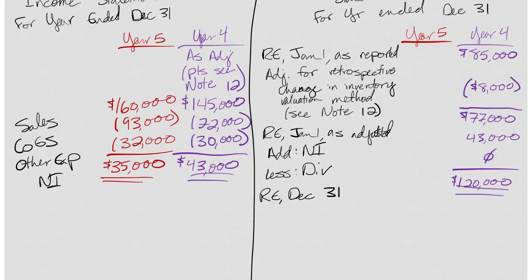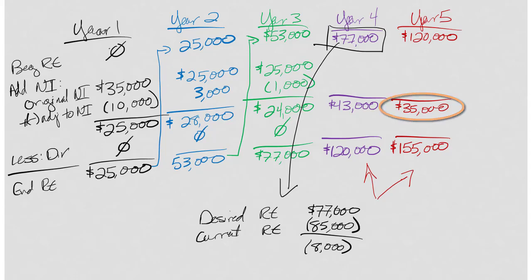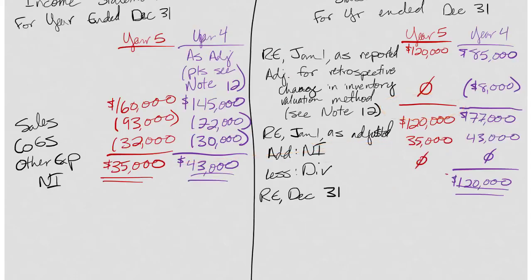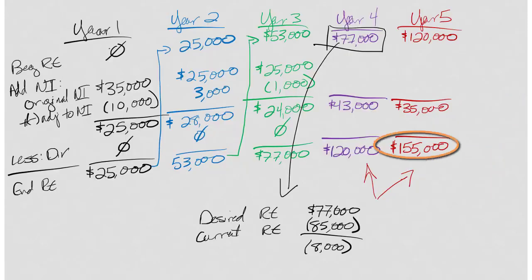Now I can move on to year five. My retained earnings January 1 as reported is this $120,000. I'm not making a special adjustment - I've already adjusted over here so I don't have to do it again. The adjustment is for what you saw in the past that is not the same as what it is in this set of financial statements. They've never seen a beginning retained earnings number reported for year five. Net income for the year is $35,000 from this table. Dividends still zero. 120 plus 35 gives me $155,000. I'm going to make sure that this number balances, and it does.